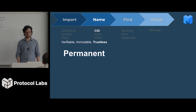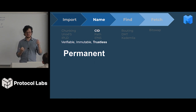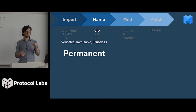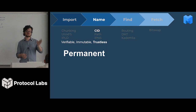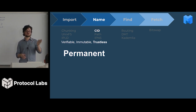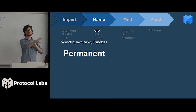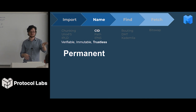Why do we use hashes and CIDs? They're verifiable, immutable, trustless, and permanent. If I have a CID that points to something, it'll always point to that same thing. When I say permanent, I don't mean the data is always going to be there — I just mean my name for that data will always point to the same data, and the data can't change. Someone else can't just replace it and say, oh, this is the thing you wanted. I can tell exactly whether I got back the correct thing.